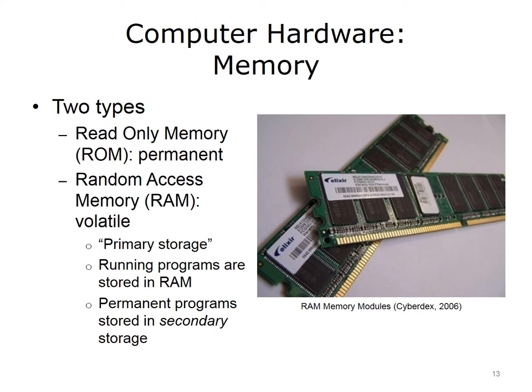Random Access Memory, RAM, is volatile. RAM is active only when a computer is on and running. Anything that is stored in RAM will not be saved once the computer is turned off. RAM is also known as primary storage, which is where programs are stored as they run. RAM is often just referred to as memory. Too little memory can slow down your computer, and adding more RAM can speed up your computer, since it provides more space for programs to run. RAM holds all programs as they run, but is not where programs are stored permanently.